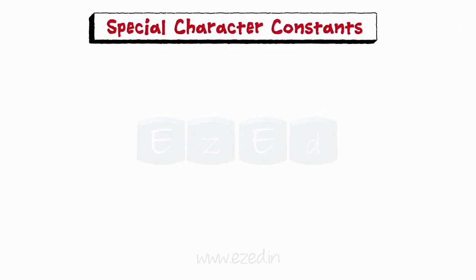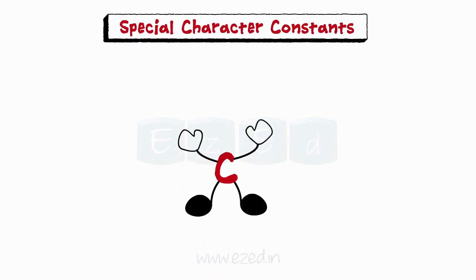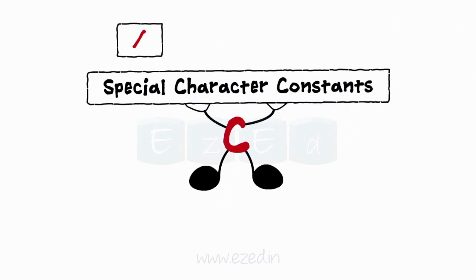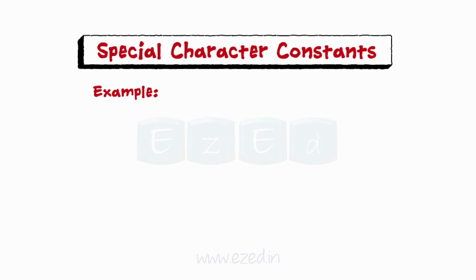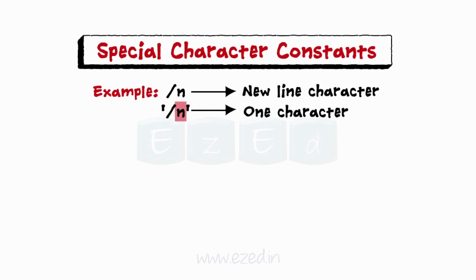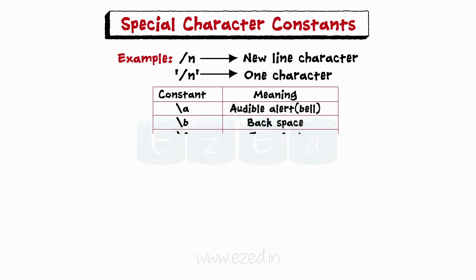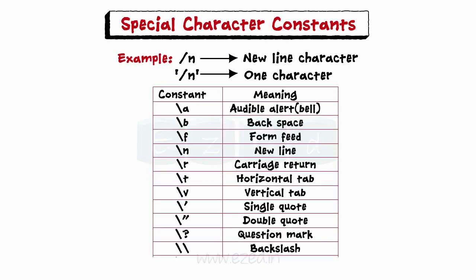Lastly, special character constants. C supports special character constants which use the backslash character and are used in output functions. Example, the symbol backslash n stands for new line character. Each of the special character constants represents one character although they consist of two characters. The table below consists of the list of special symbol characters.